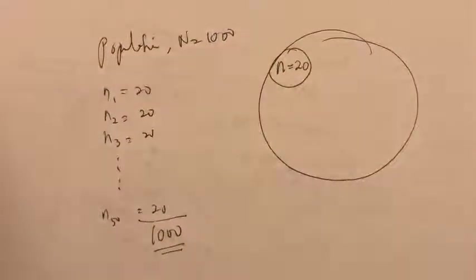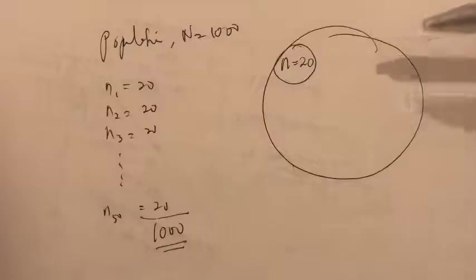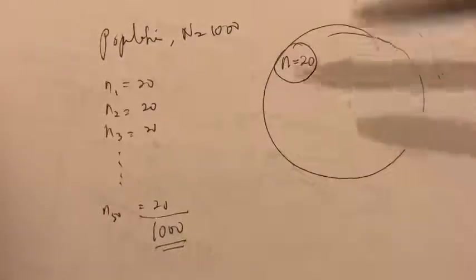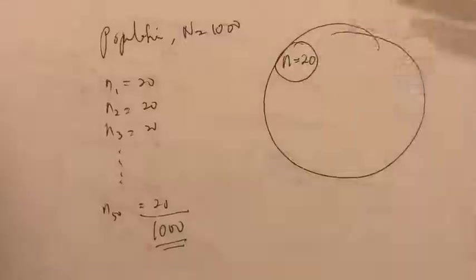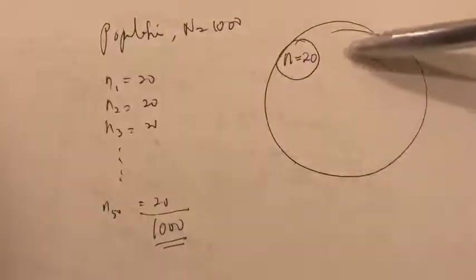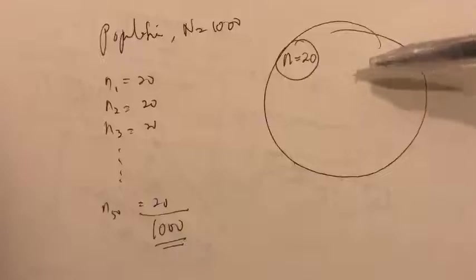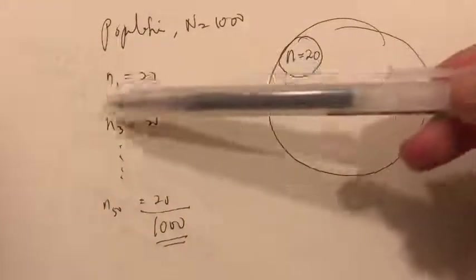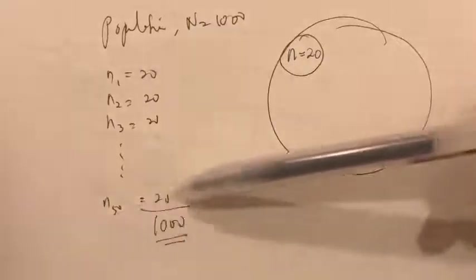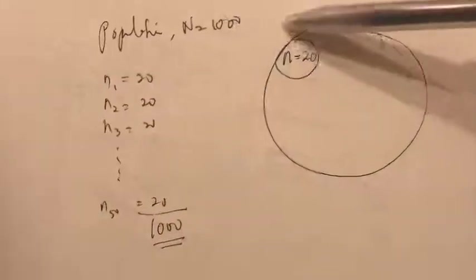Let's do some illustration. Say this is our population, which has a size of 1,000 — this big circle here. From this population, we are able to collect several samples. Let's say each sample has equal sizes of 20. Technically, how many samples can I collect from this population if each sample has the same size? We can actually collect up to 50 samples: the first sample with size 20, the second sample also size 20, the third sample size 20, and up until the 50th sample, also size 20. If we add all of the sample sizes, we will get 1,000, which is the entire population.